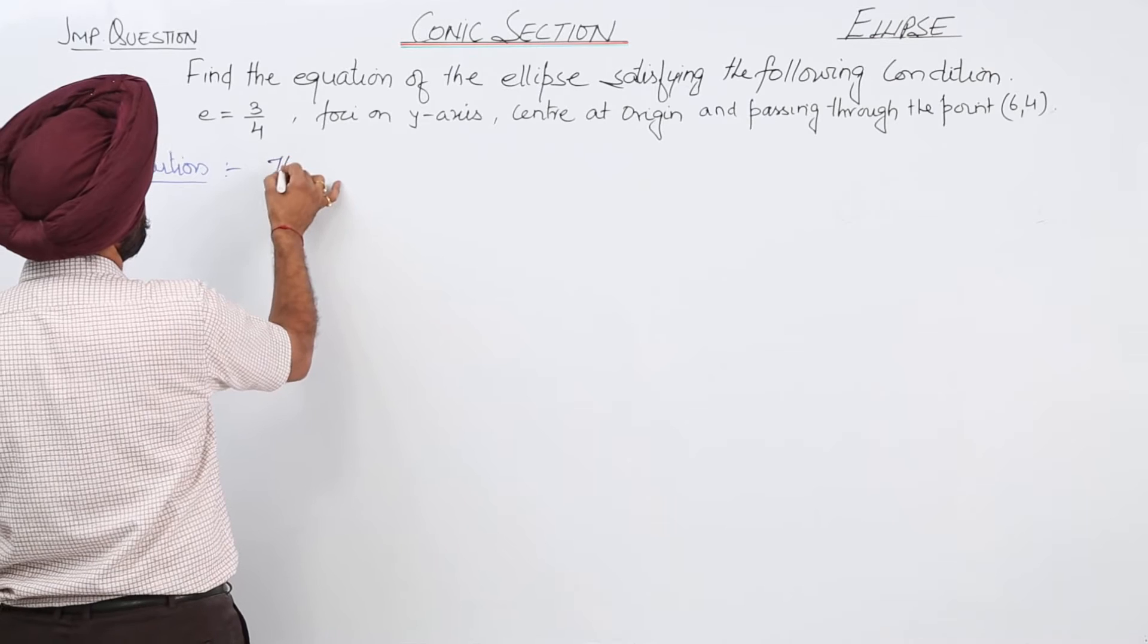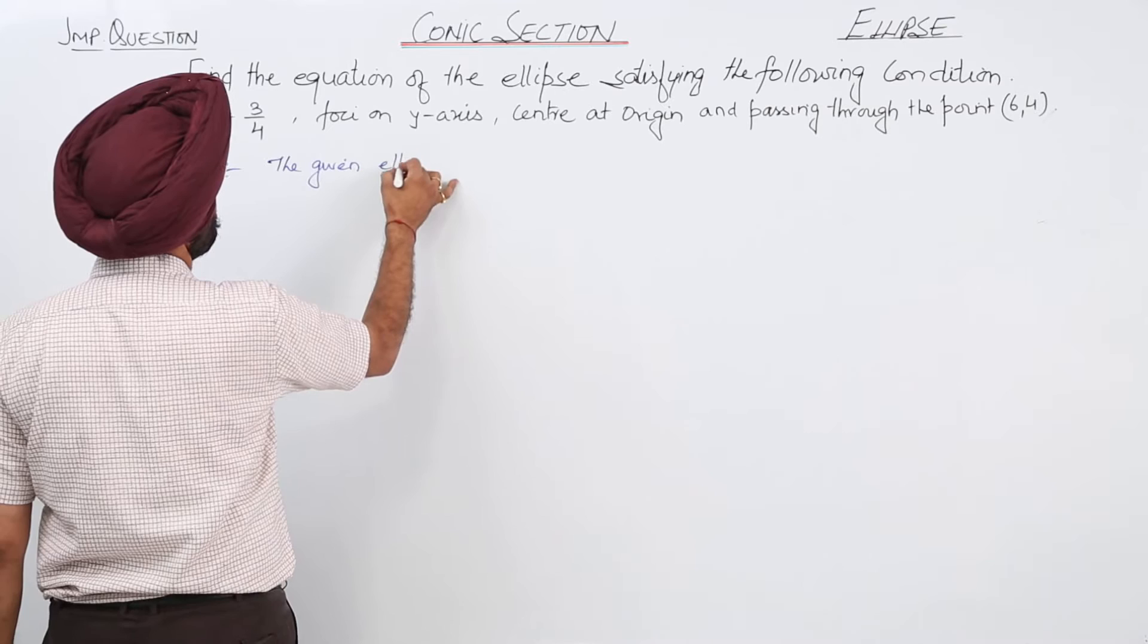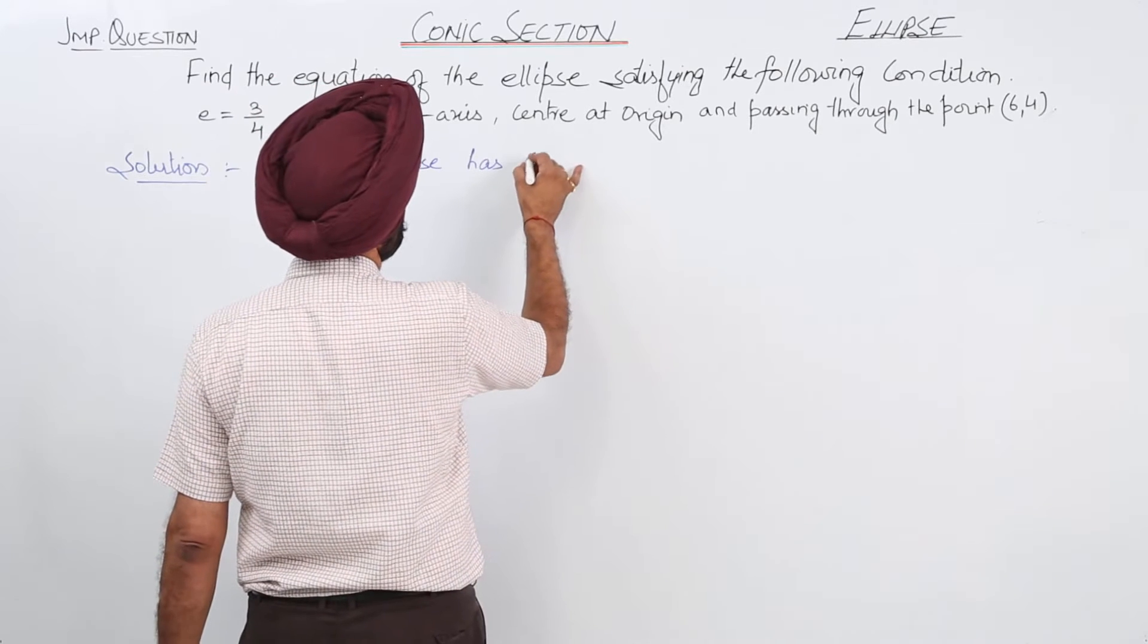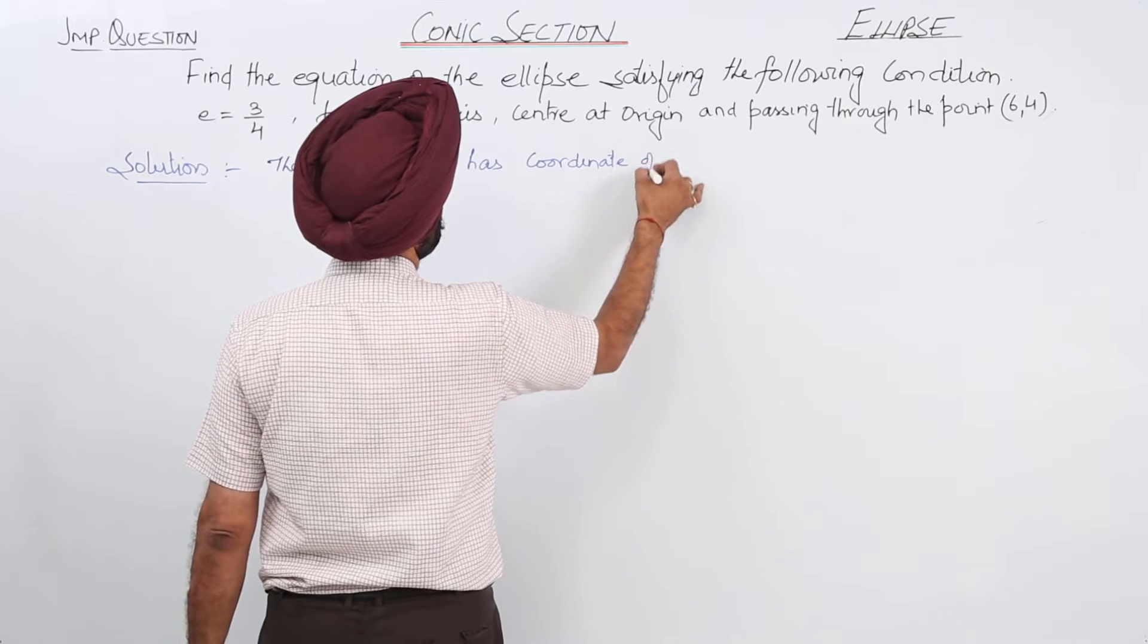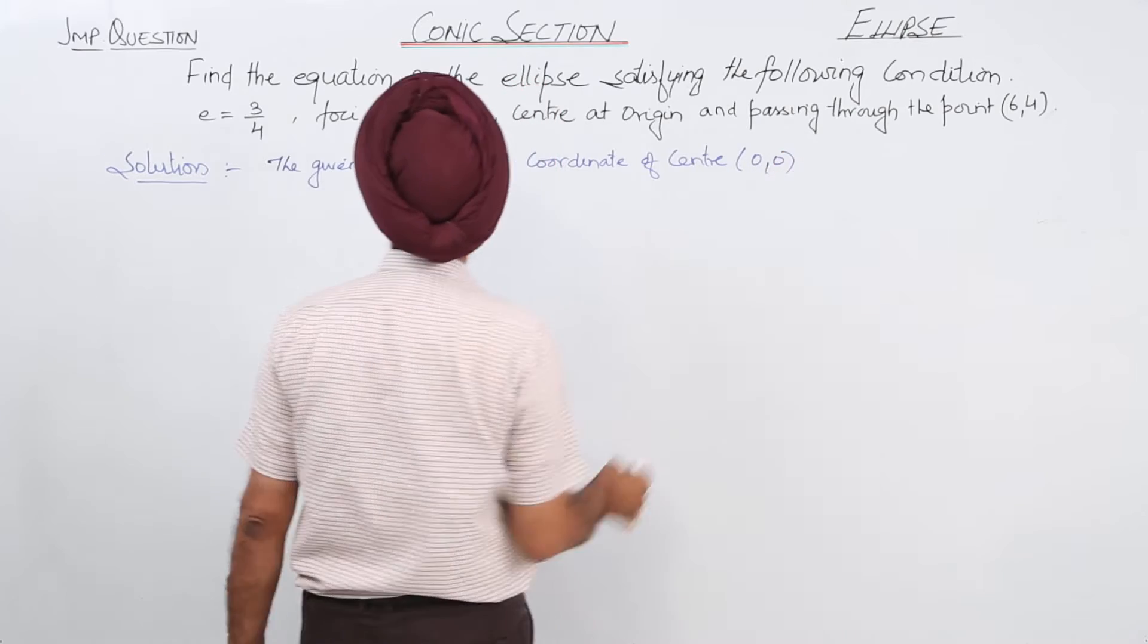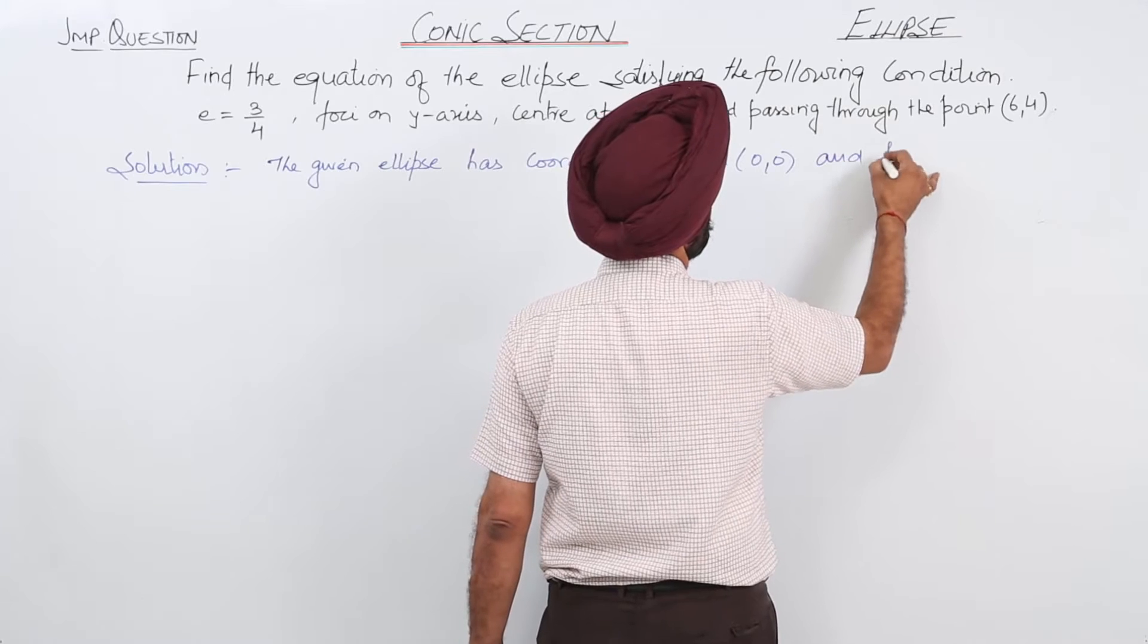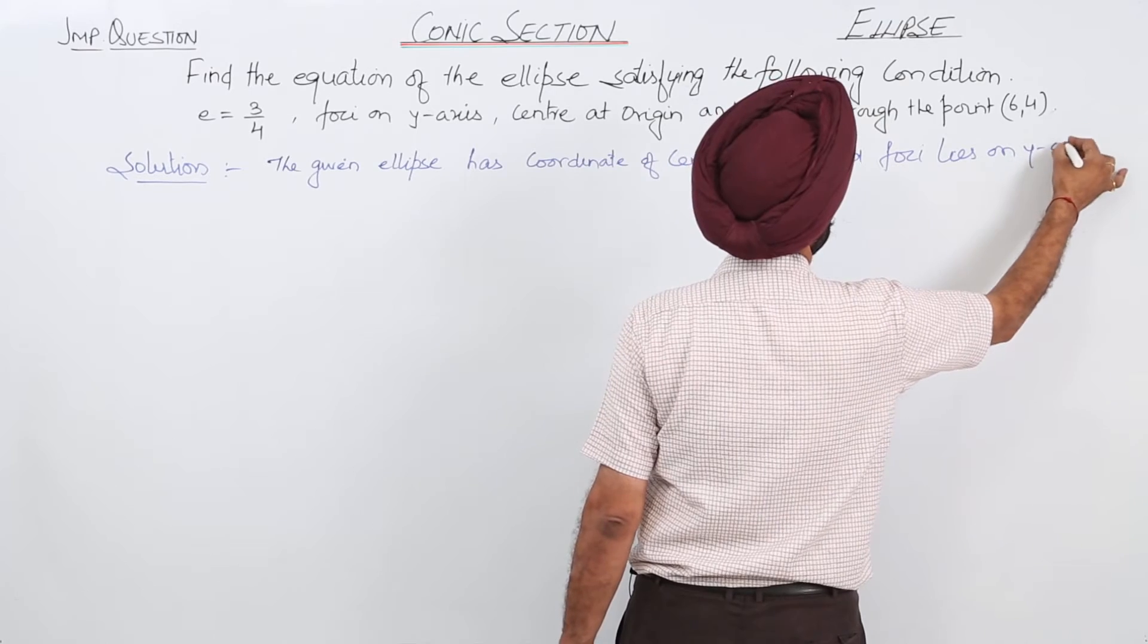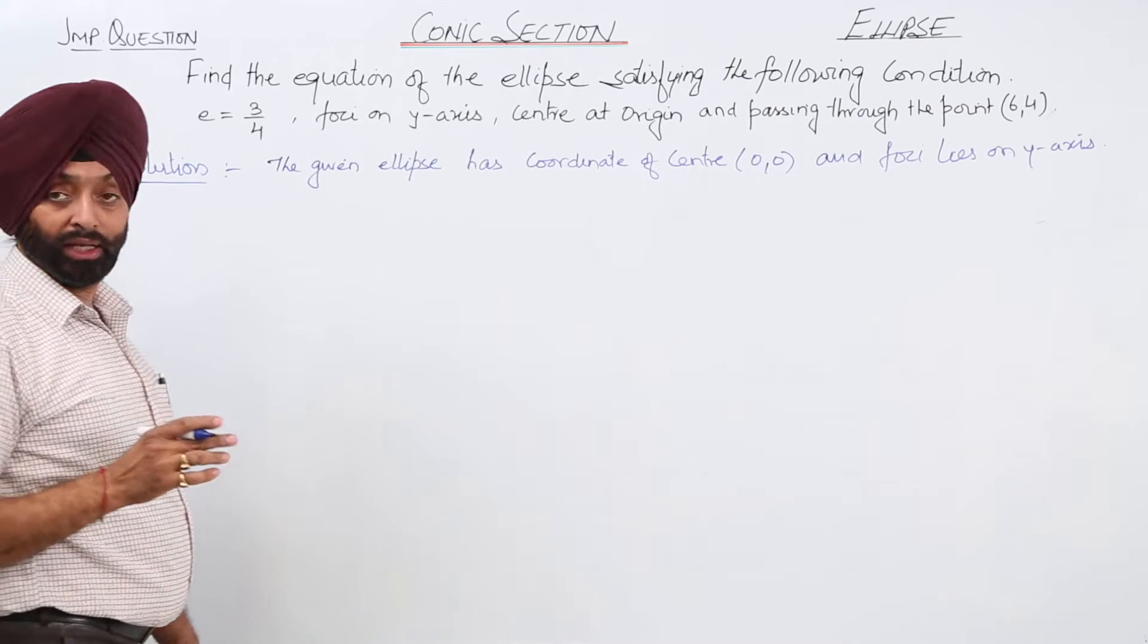The given ellipse has coordinate of center at origin (0,0) and foci lies on y-axis. This is the condition which is given to us, and the foci lies on the y-axis.